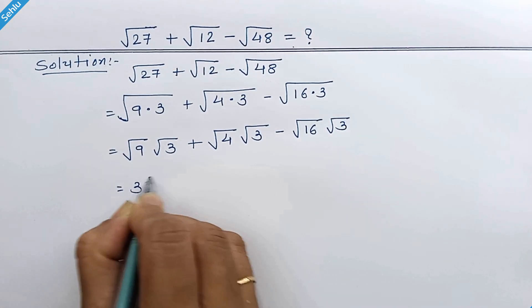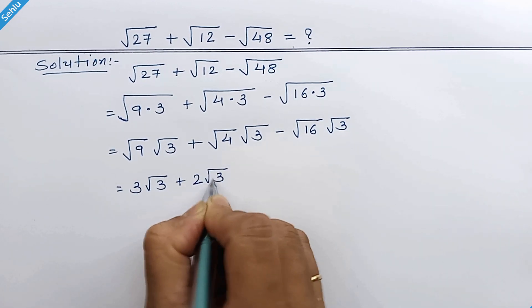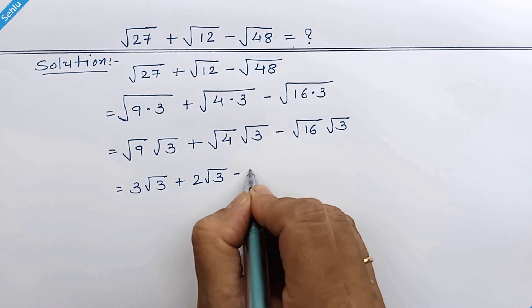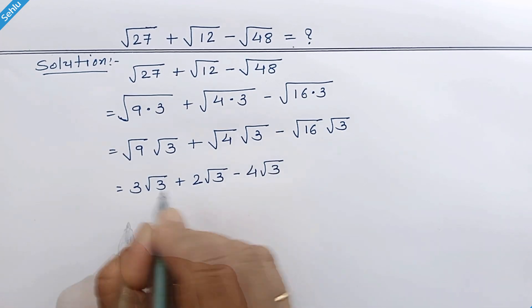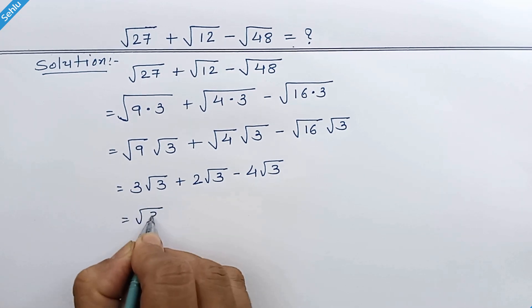Square root 9 is 3, square root 4 is 2, and square root 16 is 4. Square root 3 is common among all three terms, so we can factor out square root 3.